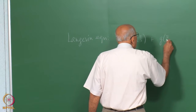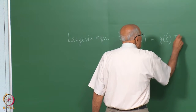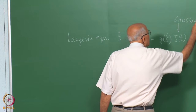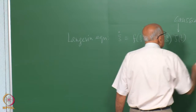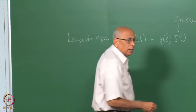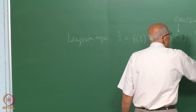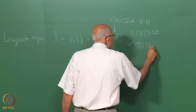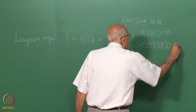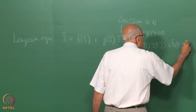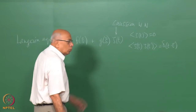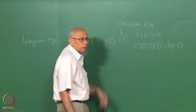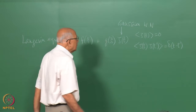Plus a term g of xi times a white noise — a Gaussian white noise which has zero mean and a delta function correlation. So zeta of t, zeta of t-prime equals delta function of t minus t-prime with unit strength. Any strength in the noise is subsumed in the quantity g, which could be a constant for instance.